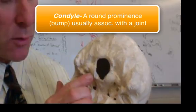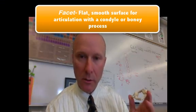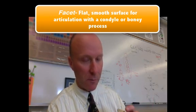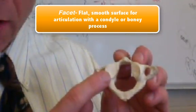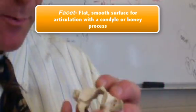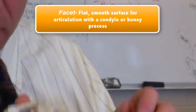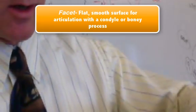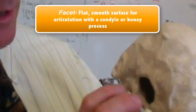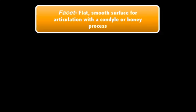Those condyles articulate with facets. Facets are small flat surfaces that allow for the articulation of a condyle. Here's the first cervical vertebra — in fact this is the anterior surface of it — which cradles the two condyles of the skull called the occipital condyles.